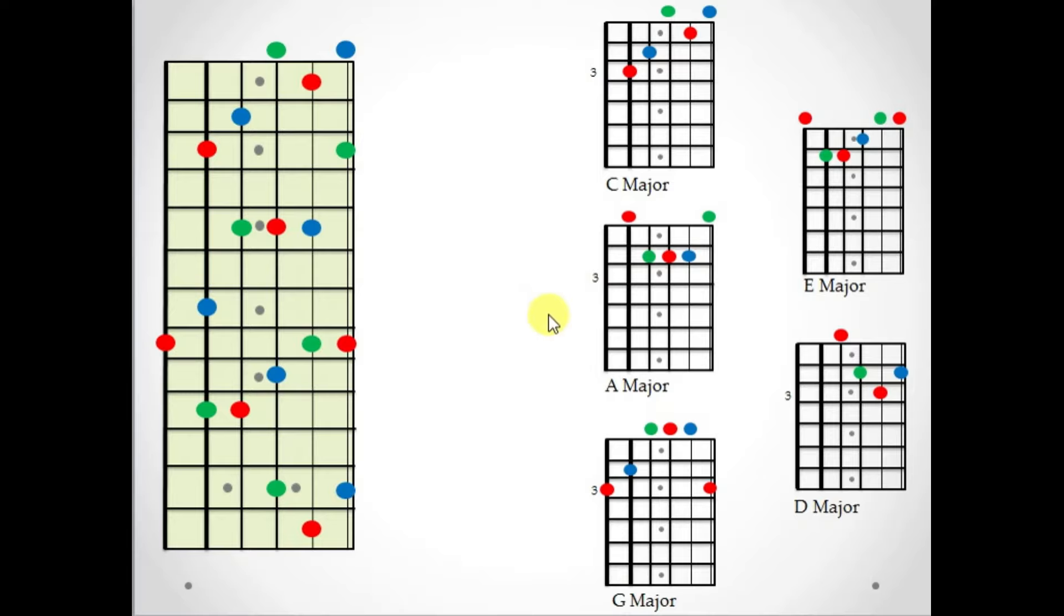Now, the CAGED system does have kind of a drawback. These are all major chords. And if I wanted to apply the CAGED system to a minor chord, I would have to completely redo all these shapes. These would be completely brand new. And it's not that hard to do. And I'm kind of throwing the challenge out to you guys to do that and try to learn something new on your own without an instructor.